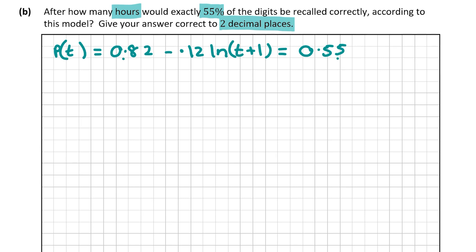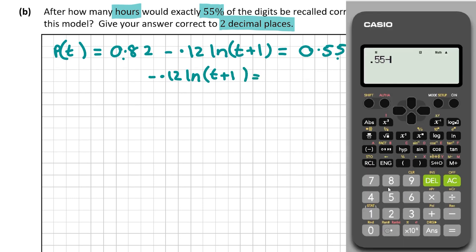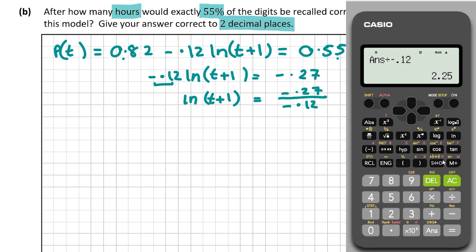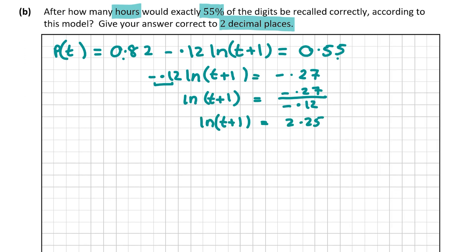Rearranging: 0.12 ln(T + 1) = 0.55 minus 0.82 = minus 0.27. Dividing both sides by 0.12: ln(T + 1) = minus 0.27 divided by minus 0.12 = 2.25. Now there's a very important rule to remember: if ln(A) = B, then A = e to the power of B. This is definitely something to learn for the Leaving Cert.